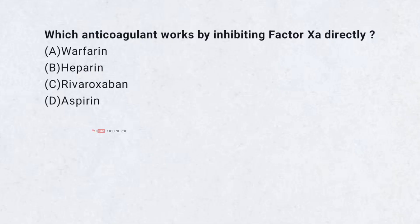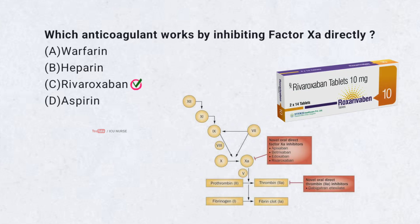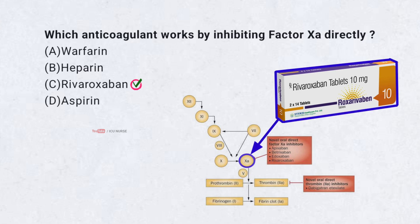Which anticoagulant works by inhibiting factor XA directly? A. Warfarin, B. Heparin, C. Rivaroxaban, D. Aspirin. Correct answer: C. Rivaroxaban. Rivaroxaban is a direct oral anticoagulant that specifically inhibits factor XA.